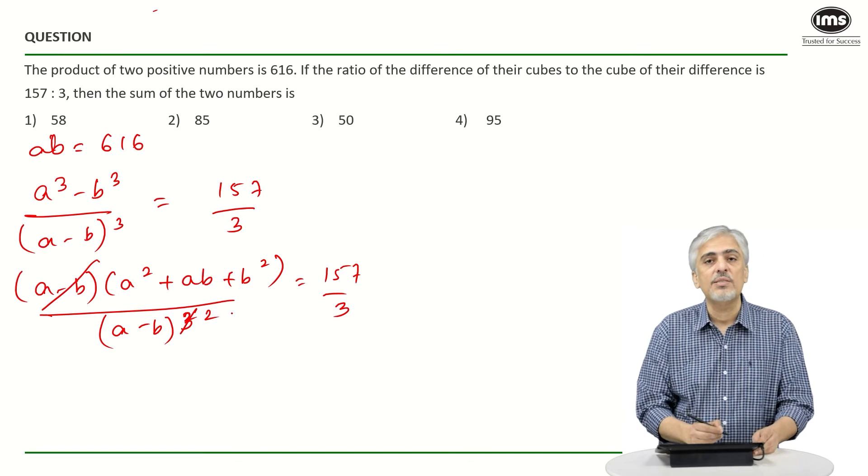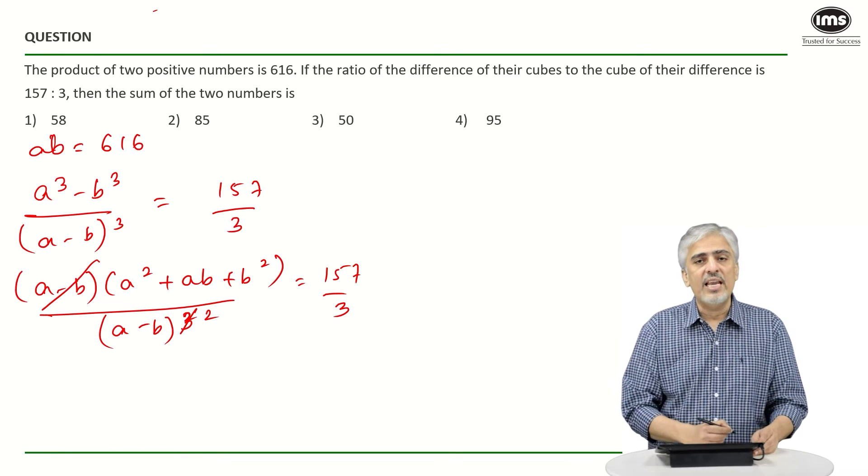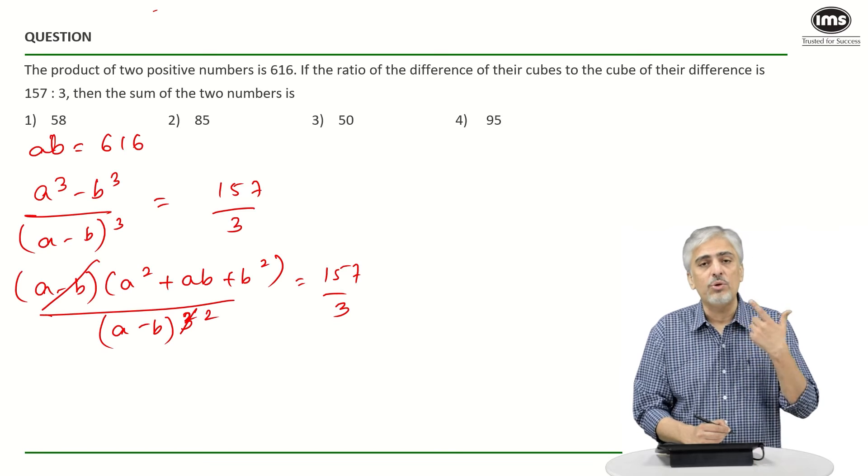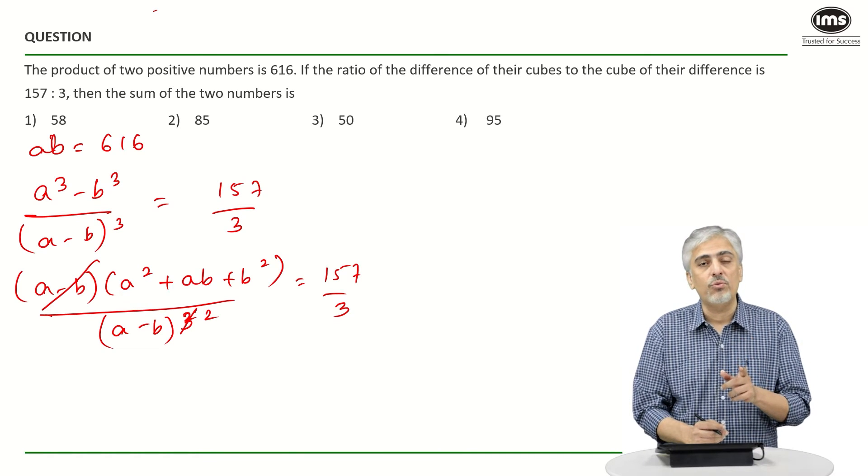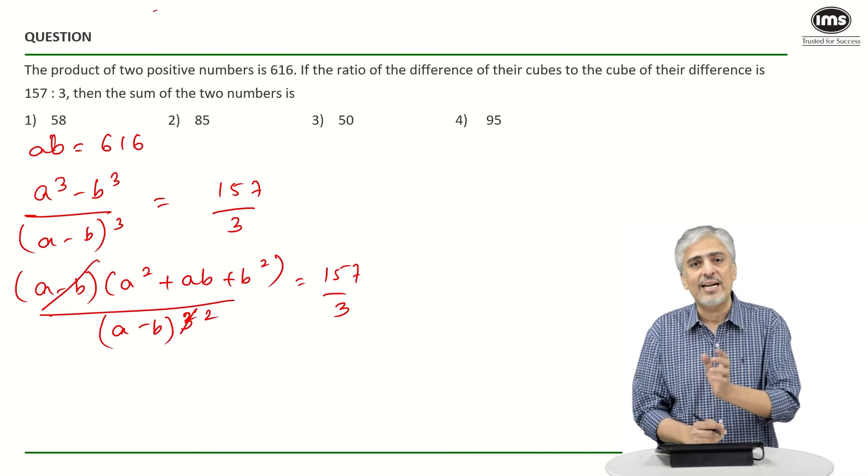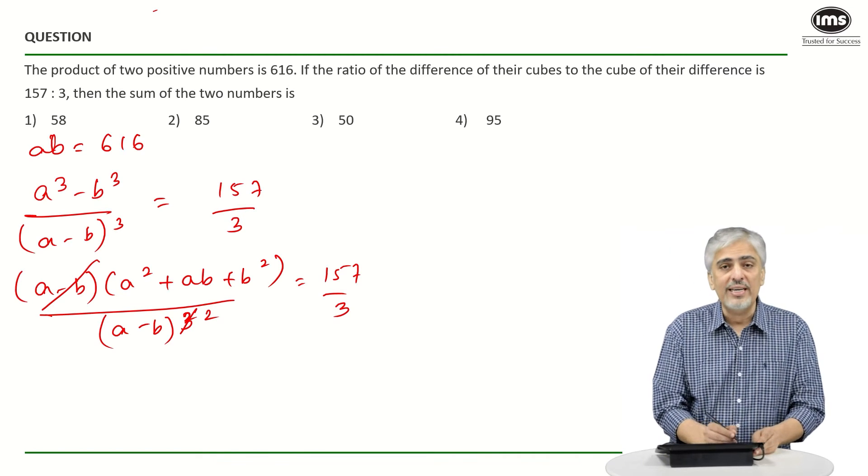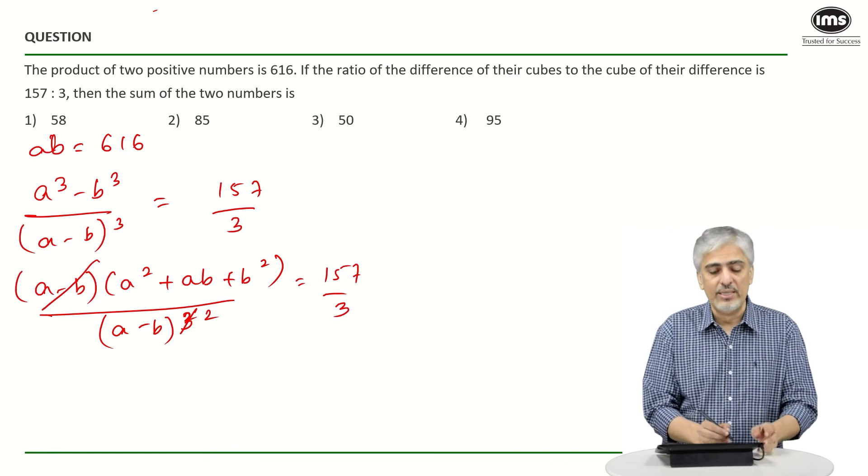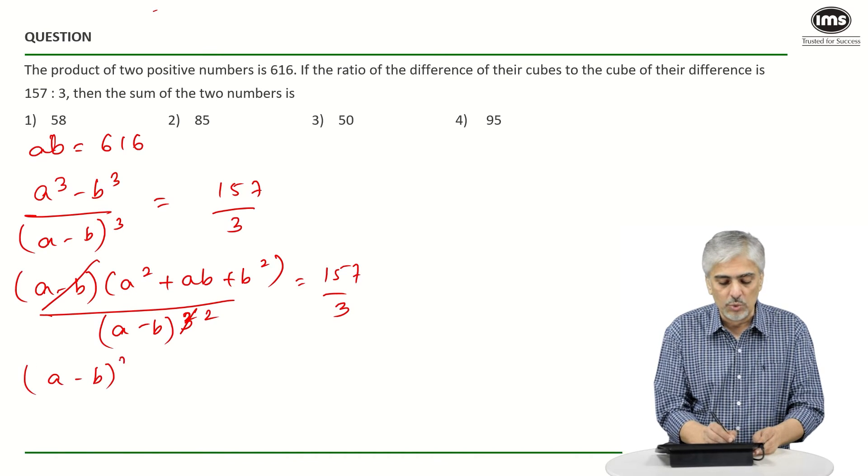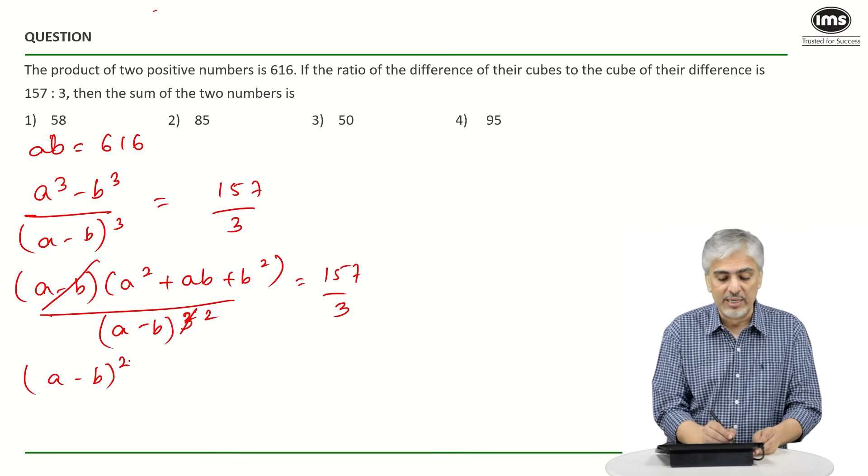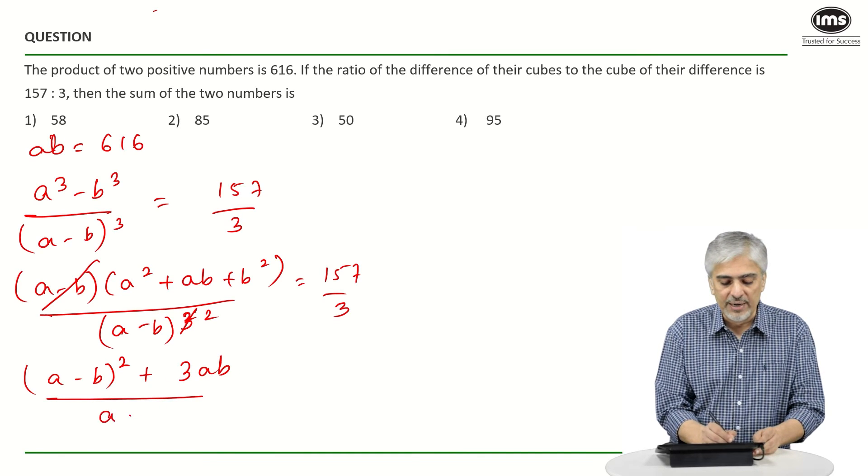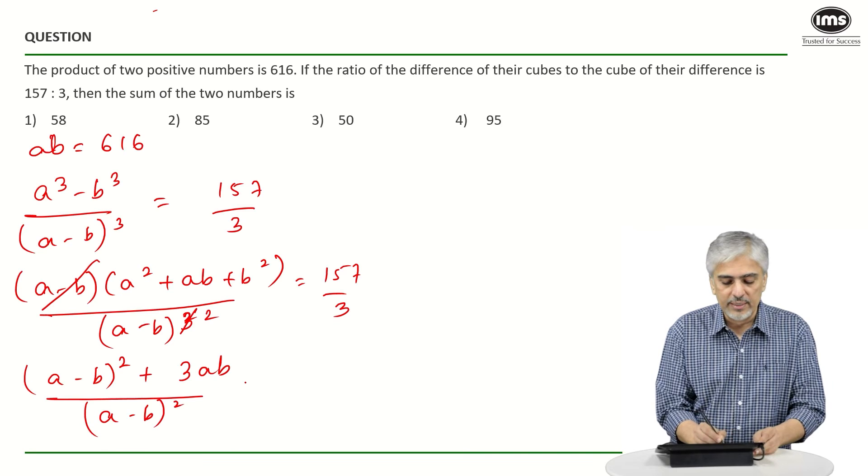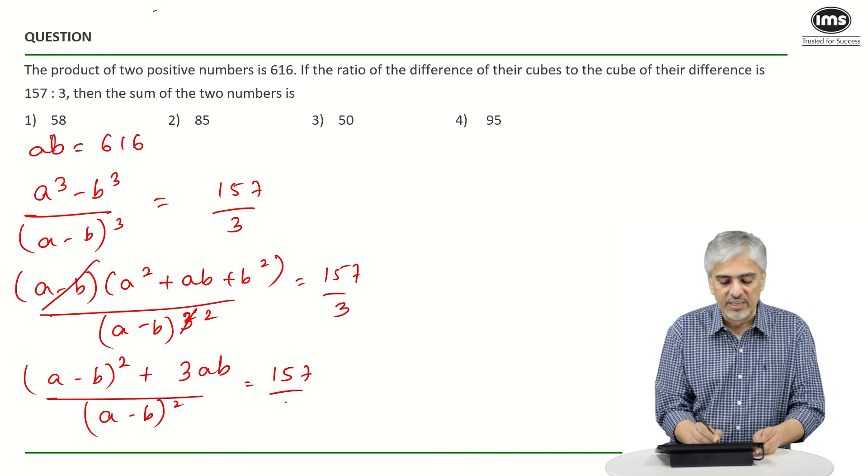So one (a minus b) cuts out we are left with (a minus b)². If I want to create that in the numerator what will I have to do? I'll have to subtract 2ab add 2ab. So the numerator after subtracting 2ab adding 2ab will become (a minus b)² pay attention this very carefully plus 3ab upon (a minus b)² is 157 upon 3.